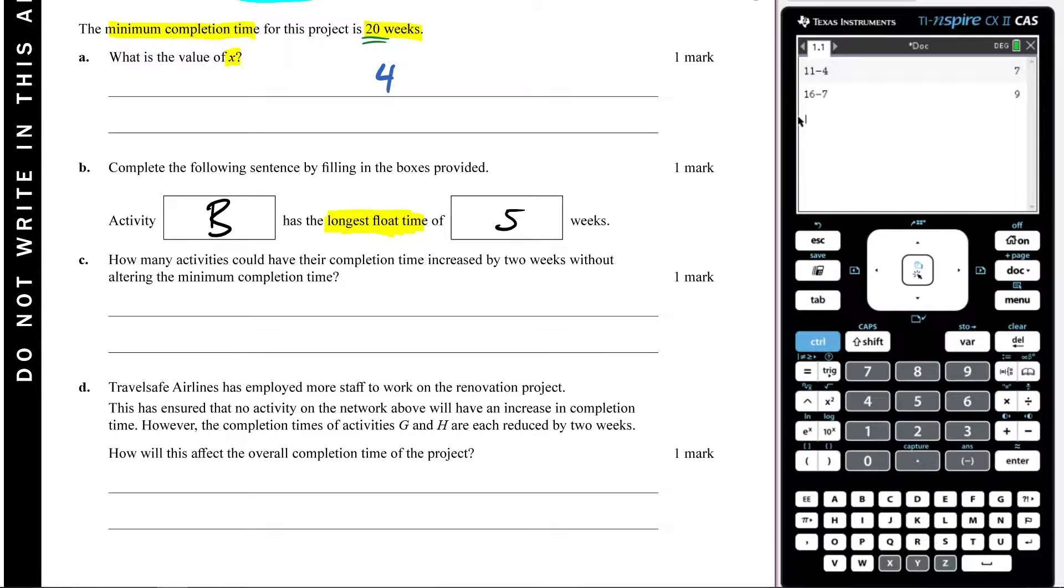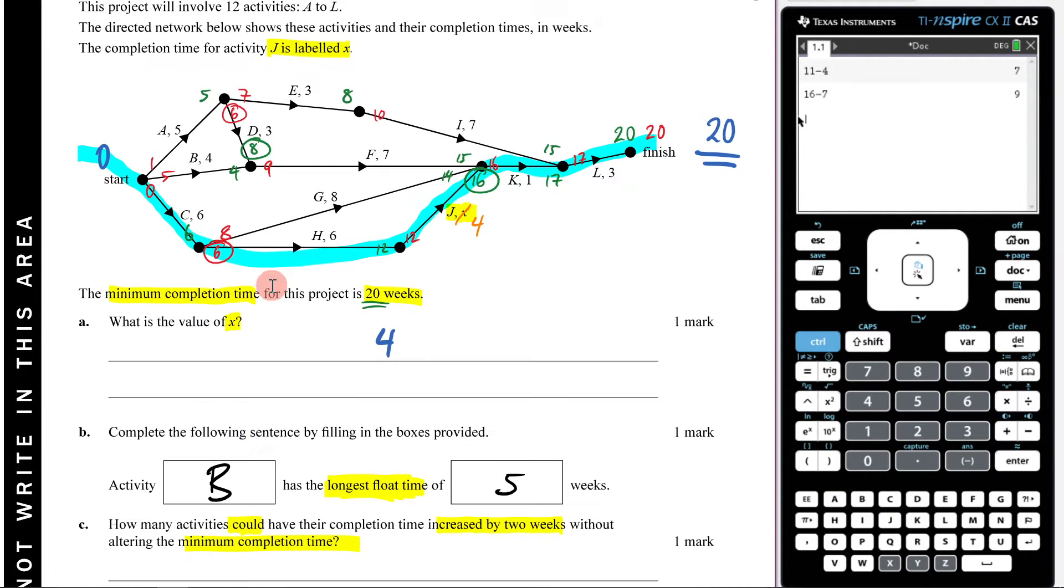Alright, we're now going to answer part C here. It says, how many activities could have their completion time increased by two weeks without altering the minimum completion time? So really what this is asking us is how many of these have a float time of two or greater that I could bump it up by without creating a new critical path.